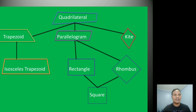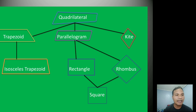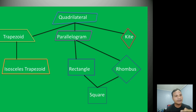Based on our definitions, we can create a flowchart with quadrilateral at the top, and trapezoid, parallelogram, and kite below it. Under trapezoid is isosceles trapezoid. Under parallelogram are rectangle, rhombus, and square. There is a relationship between square and rhombus since both have four congruent sides.